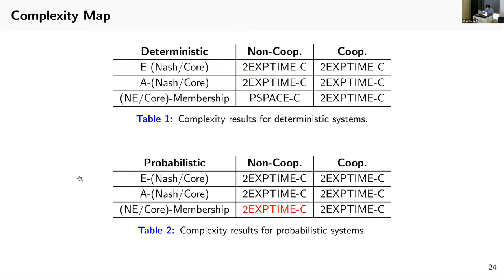This is the complete complexity landscape. In deterministic systems, all of the decision problems are double exponential time complete, except for Nash membership, which is PSPACE complete. But in probabilistic systems, all of the decision problems are double exponential time complete. So turning from deterministic to probabilistic, we only have one jump from PSPACE to double exponential time.